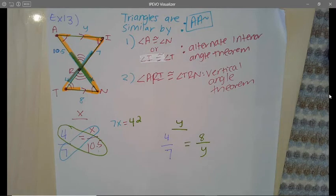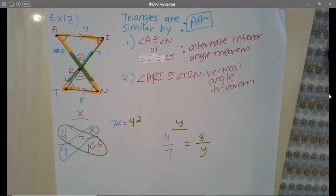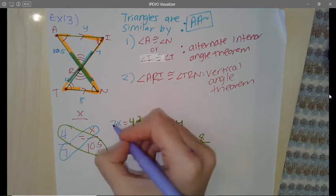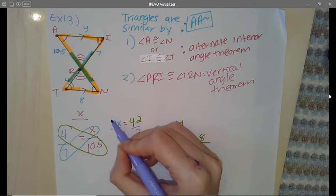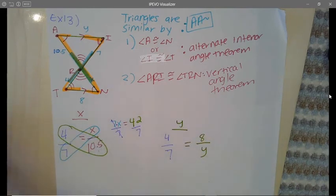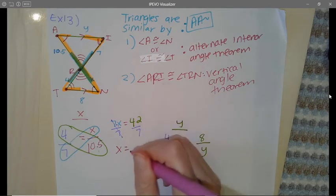We just got to solve for X. So 7 is secretly multiplying to the X, so that tells me I need to divide by 7 on both sides. 7 divided by 7 will cancel and turn to 1, which means X will equal 42 divided by 7, which is 6.